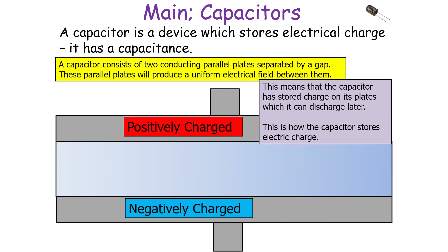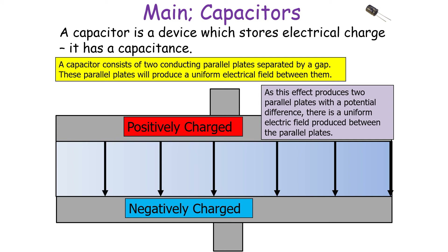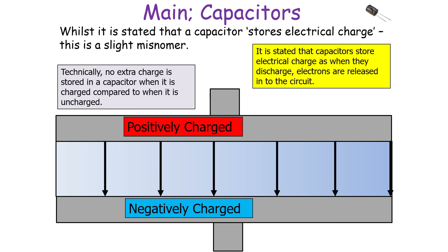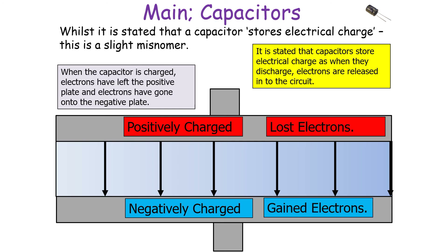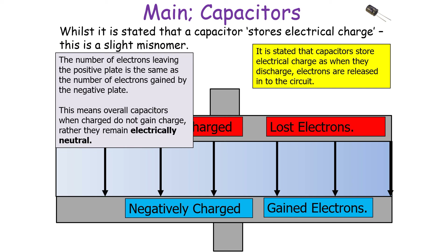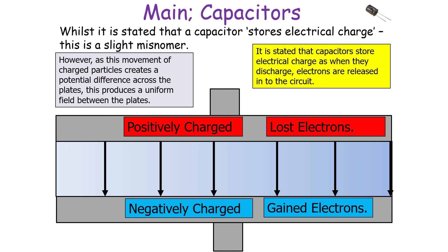The capacitor stores electrical charge on its plates, which can be discharged later. The two parallel plates with a potential difference produce a uniform field between them. Technically, no extra charge is stored in the capacitor when charged compared to when uncharged — we say it stores charge because when it discharges, electrons are released into the circuit. When charged, electrons leave the positive plate and accumulate on the negative plate; the number leaving equals the number gained, so the overall capacitor remains electrically neutral. What it provides is a movement of charged particles creating a potential difference across the plates, which produces the uniform field.